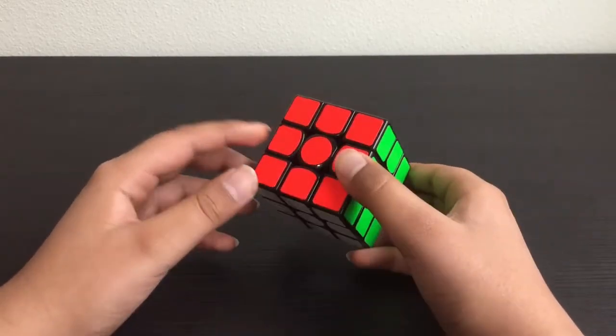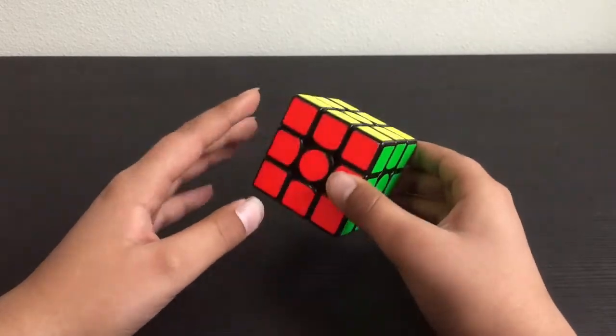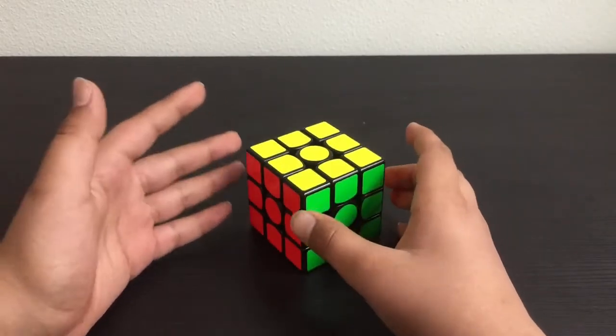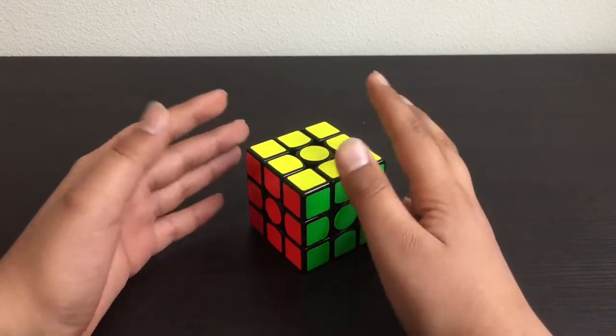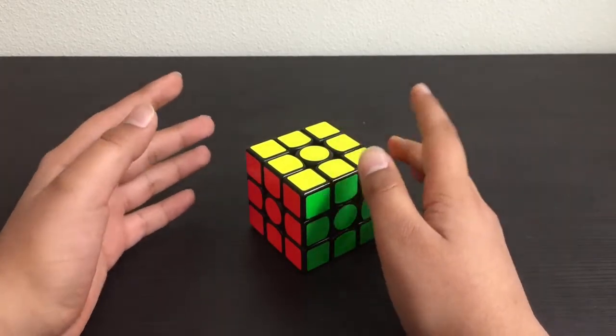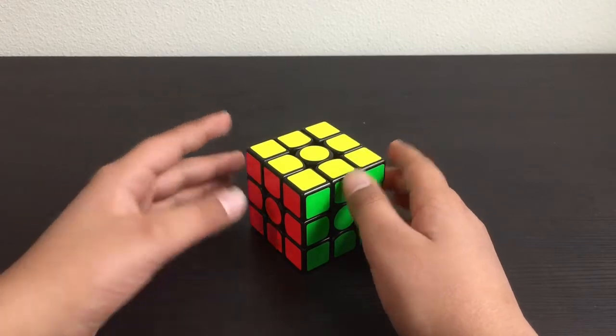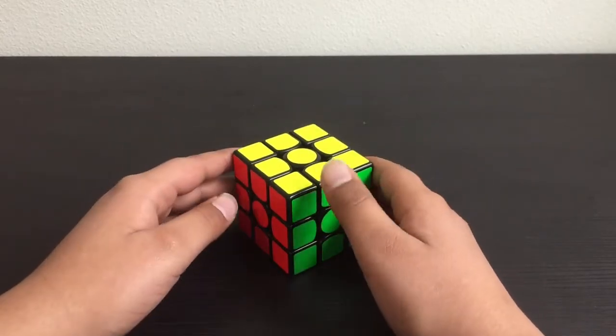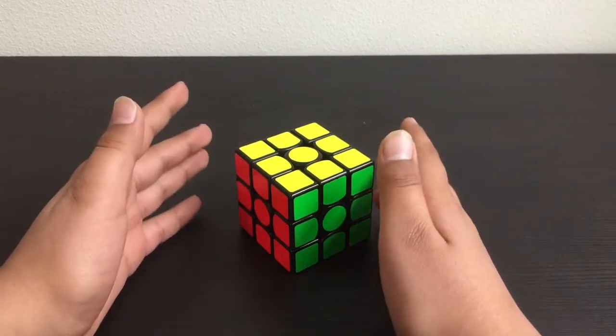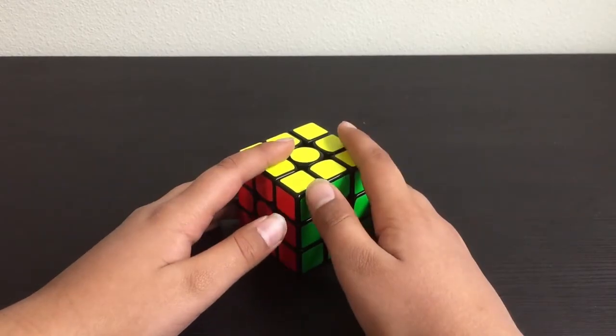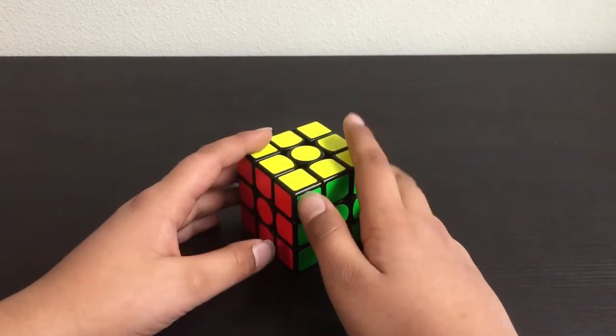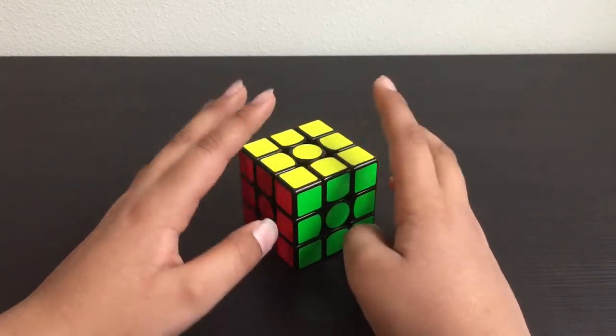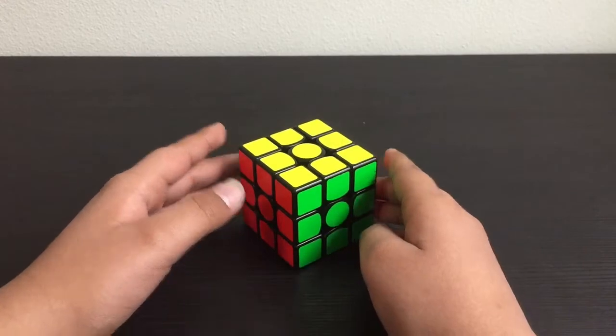Now, to make a stop motion of a Rubik's Cube solving itself, you'll first need an app. The app I recommend, which is free and really easy to use, is Stop Motion Studio. It may not have too many features, but it works if you're just beginning. I believe it's available on the App Store. I'm not sure if it's on Android or Windows, but it probably is.